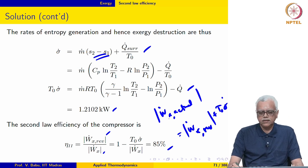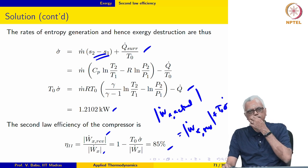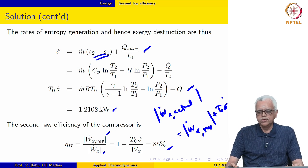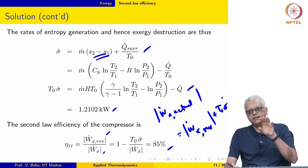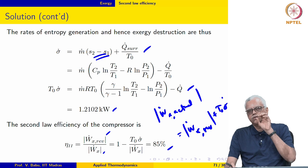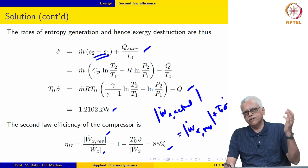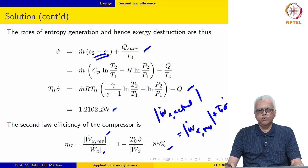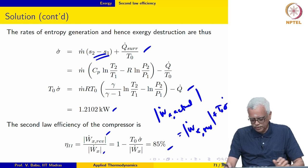To handle the negative sign for W_x dot, we used absolute values and treated lost work for what it is: in this case, lost work adds to the reversible work to give the actual work. The actual work is more than the reversible work because it is a power consuming device.